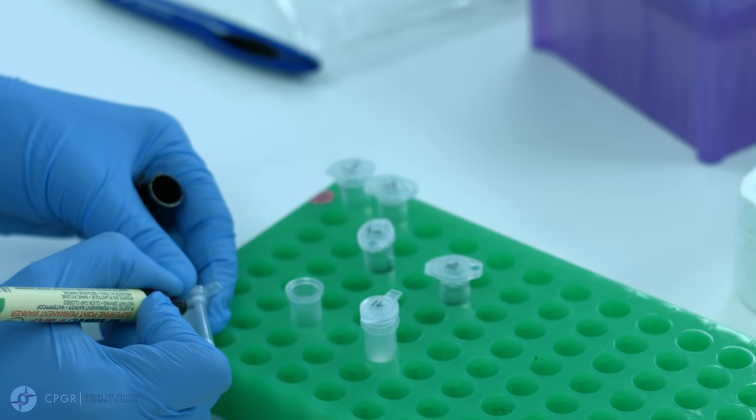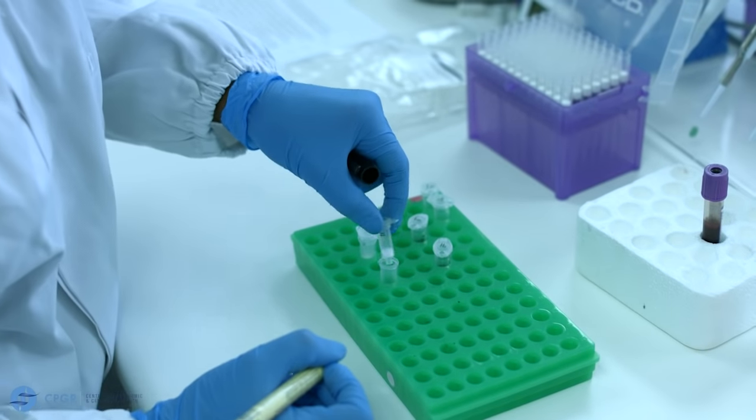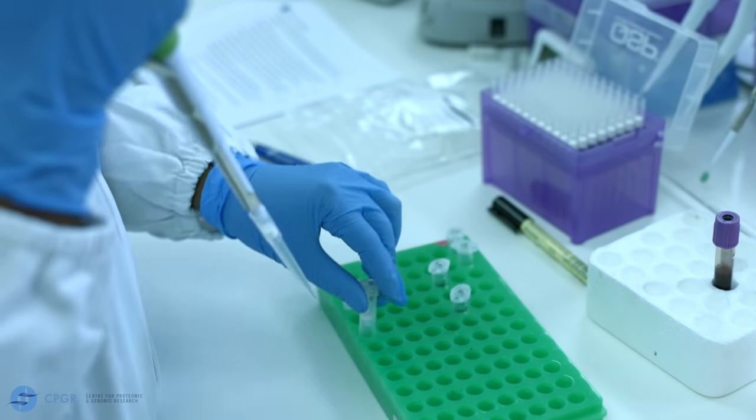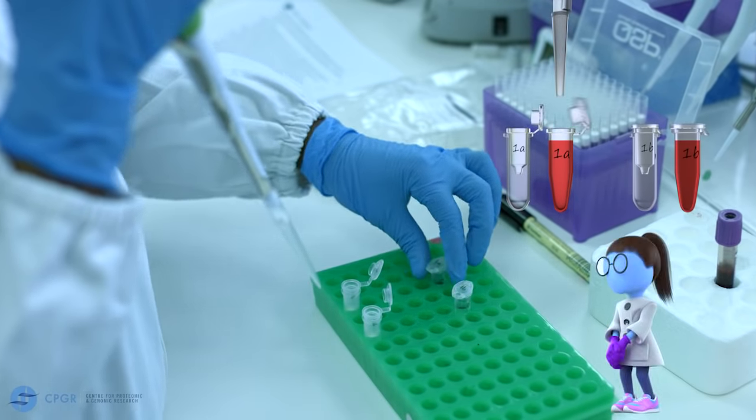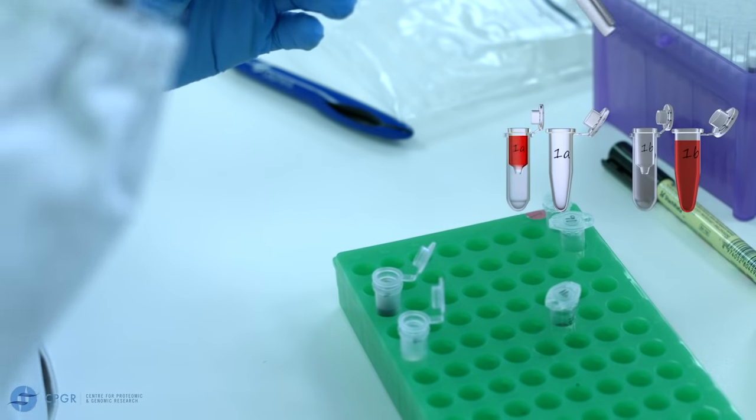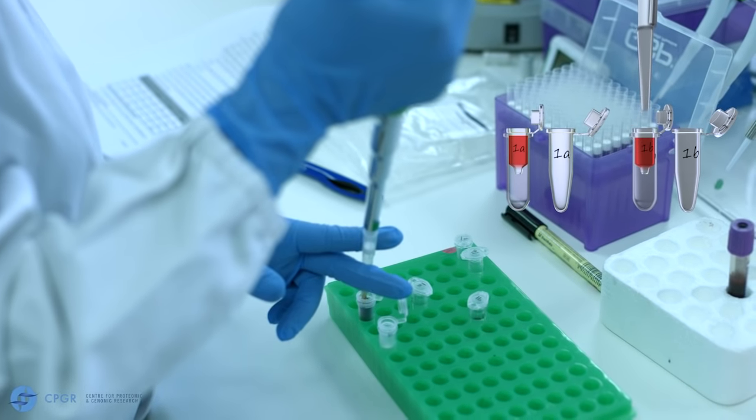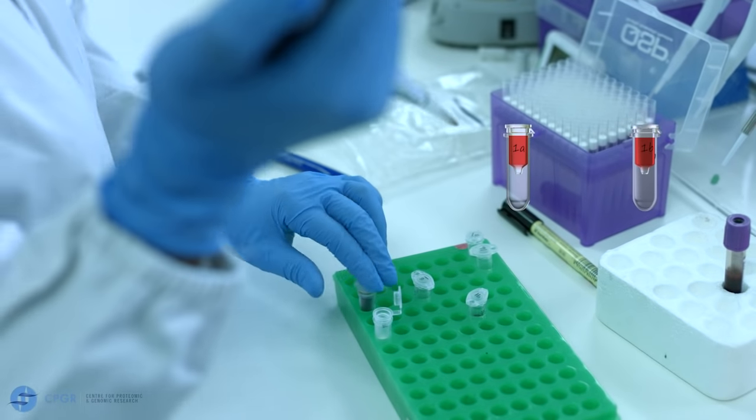We usually label the sides of the spin columns as well in case the ID on the lid is smudged by ethanol. Carefully transfer the mixture from the previous step to the spin column, taking care not to wet the rim of the spin column. And this is repeated with all subsequent samples.